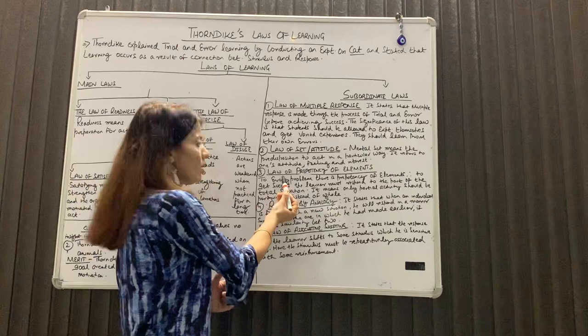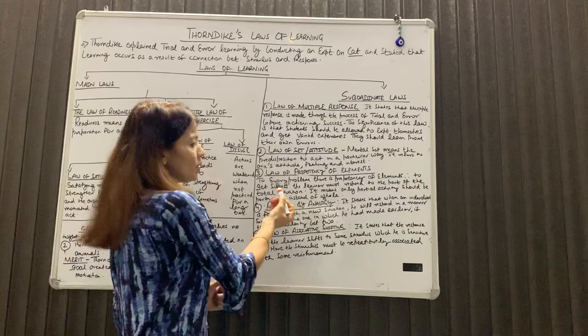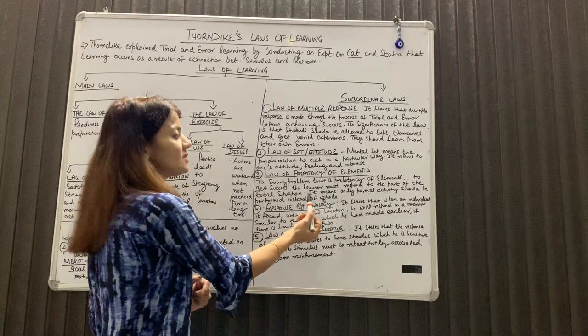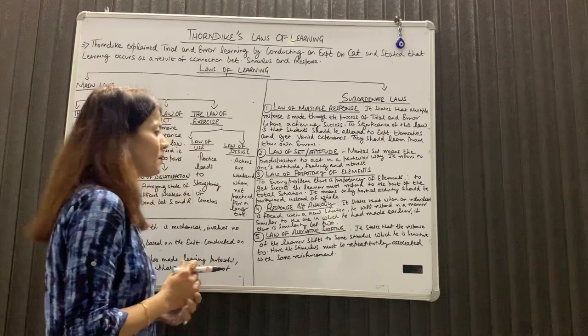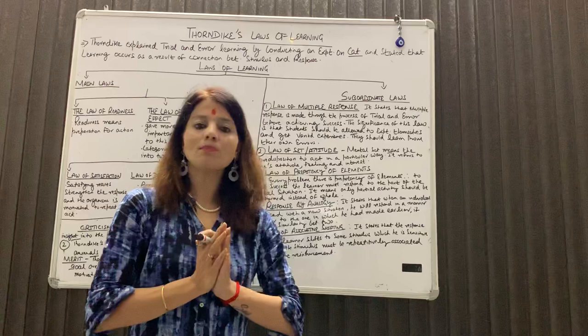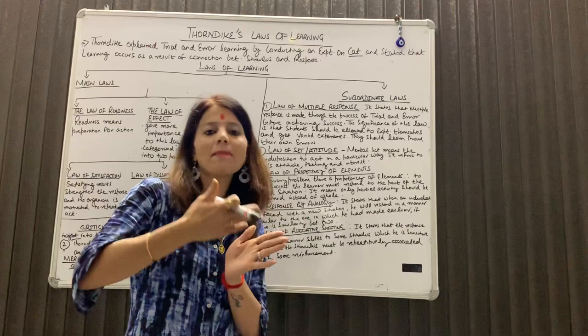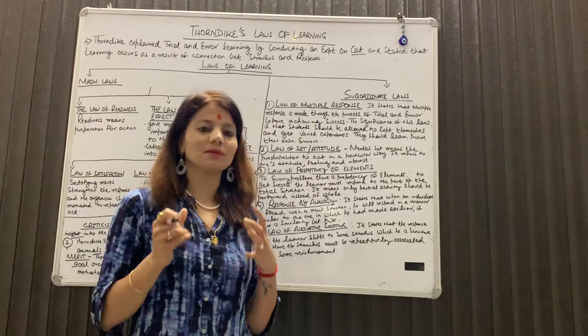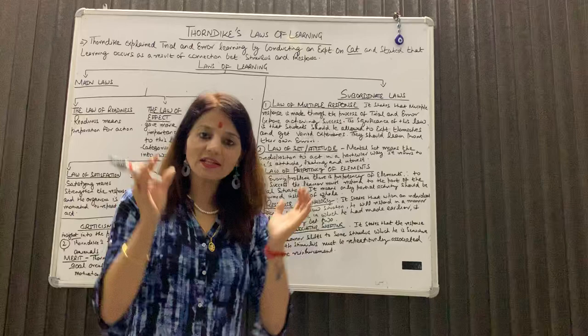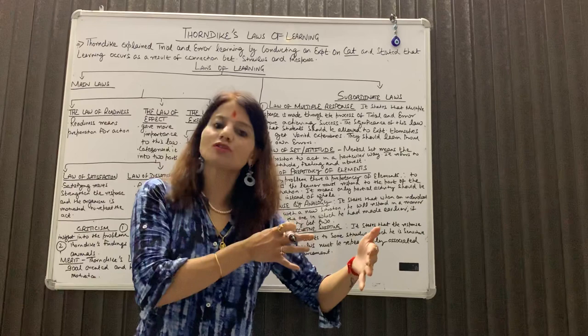Then coming to the next law — that is the law of prepotency of elements. To every problem there is prepotency of elements; therefore, to get success the learner must respond to the part of the total situation. It means only partial activity should be performed instead of whole. इन्होंने कहा था कि जो भी कार्य होता है, हम उसको as a whole solve करने की बजाय उसको parts में divide कर सकते हैं — basically अगर सामने complex activity है, तो उसे एक साथ सीखने की बजाय parts में divide करो और एक-एक part करते हुए आगे बढ़ो. इन्होंने basically parts to whole के ऊपर काम किया था.